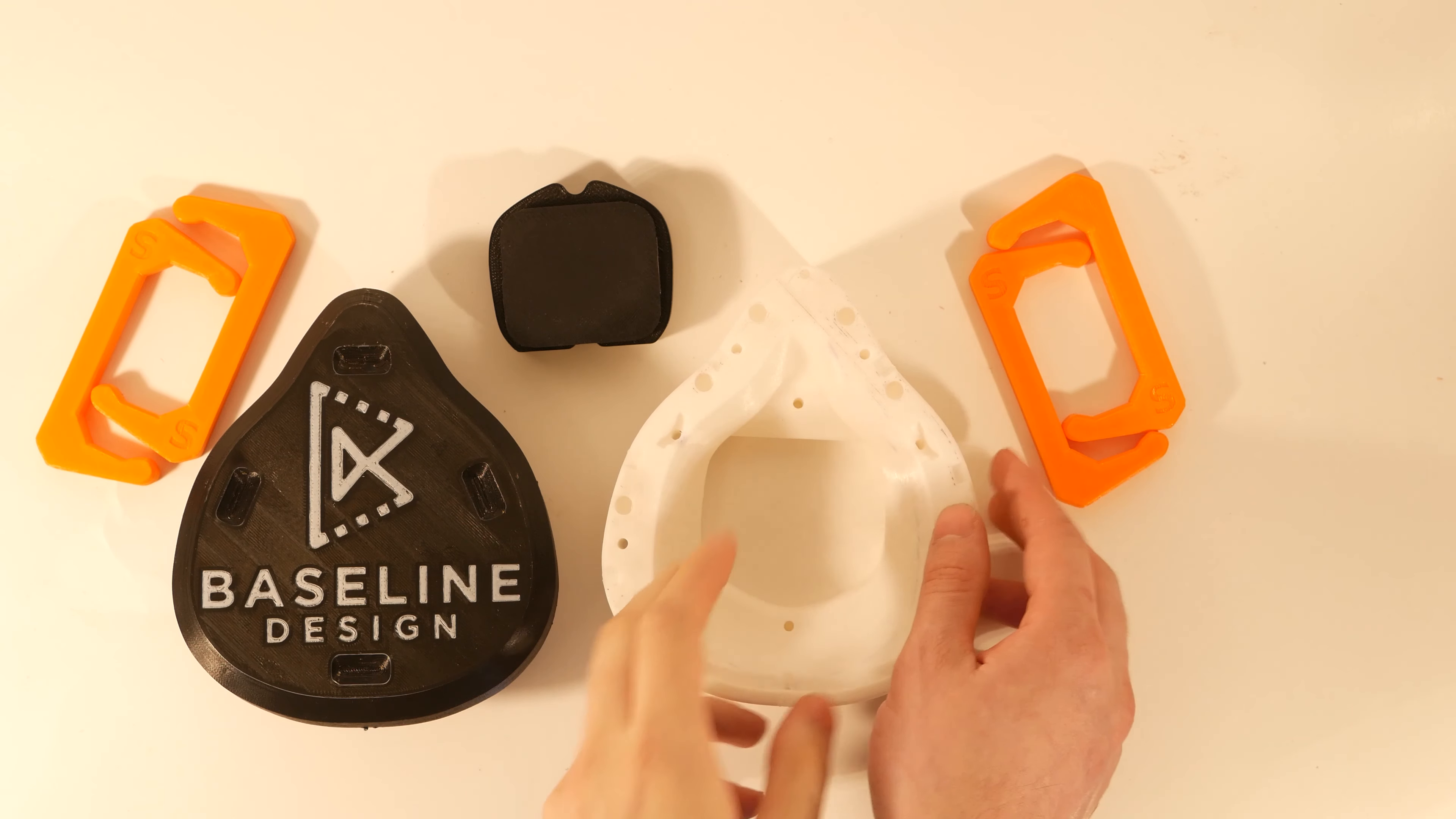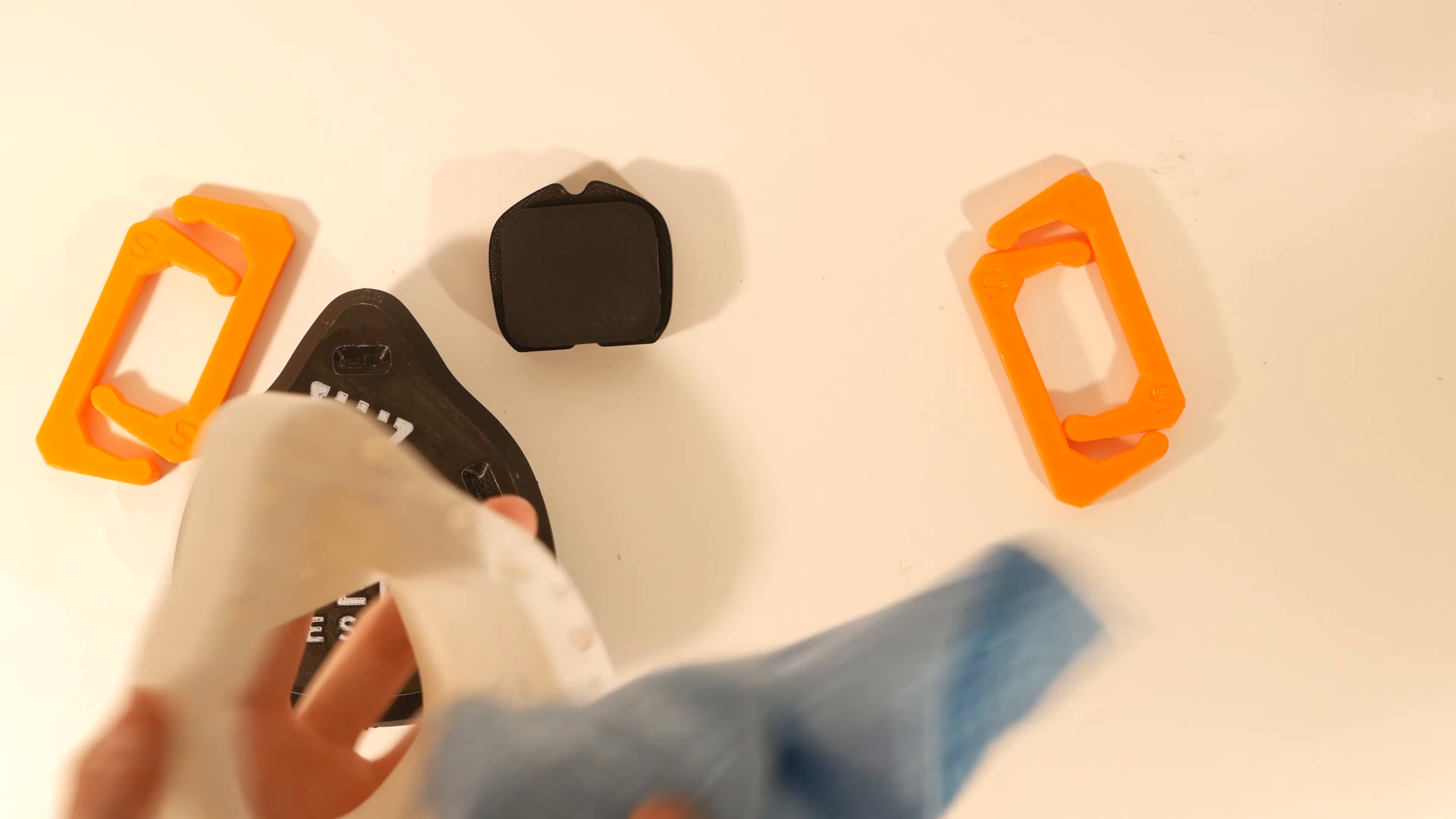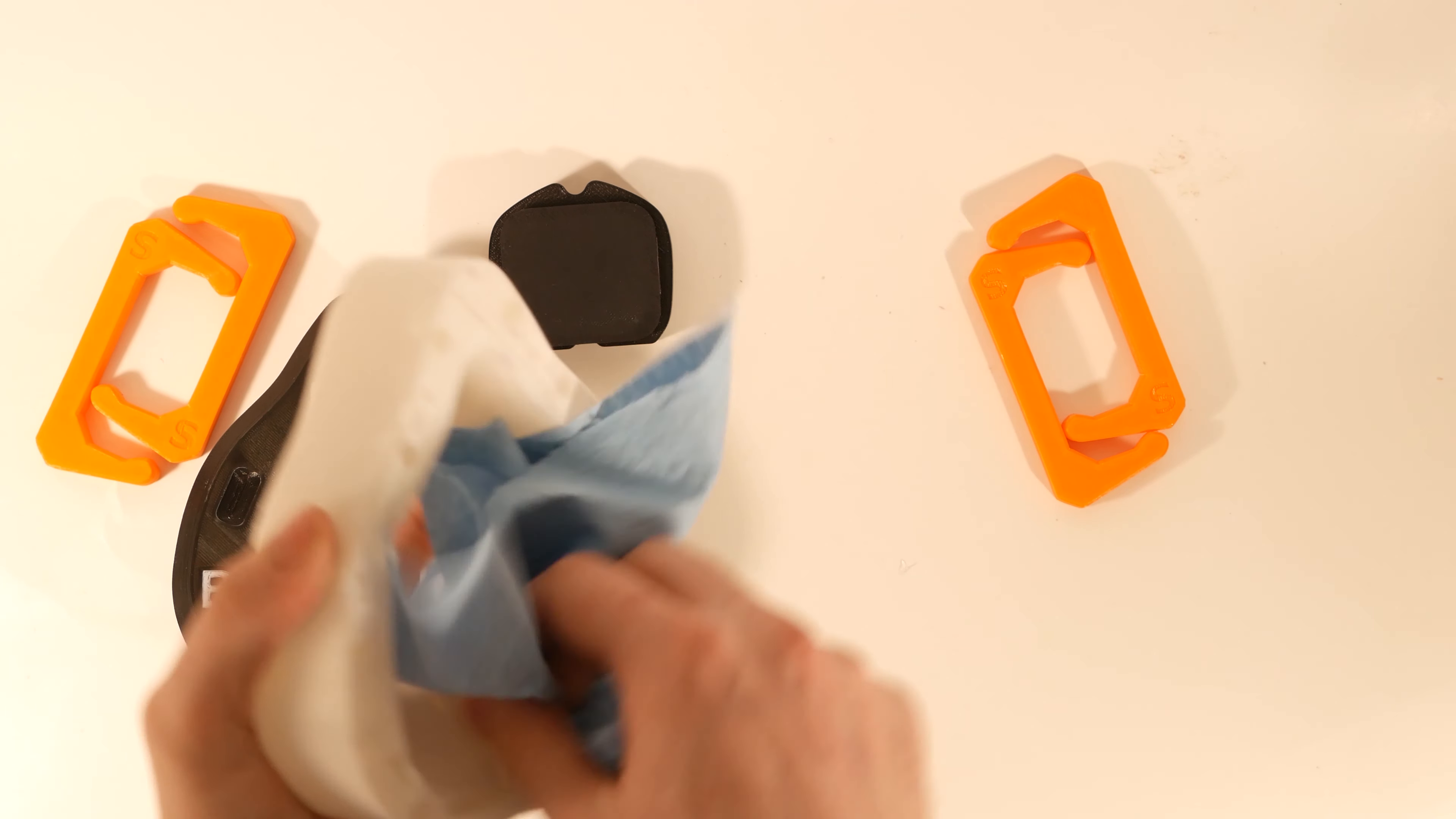Before assembling the mold, start by wiping down the inside. This will make sure that there's no contaminants that can inhibit the silicone curing.